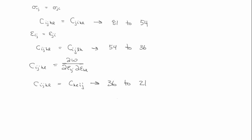All real materials have at least one plane of symmetry, which can reduce the number of constants much further. We'll do that next time.